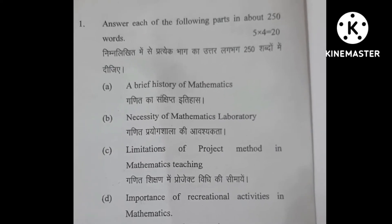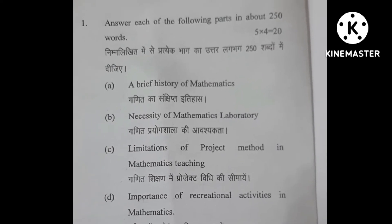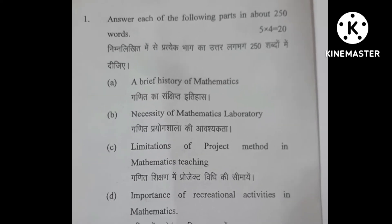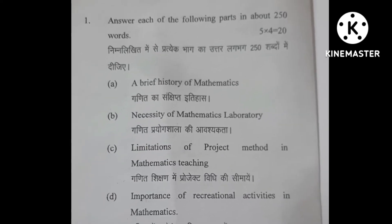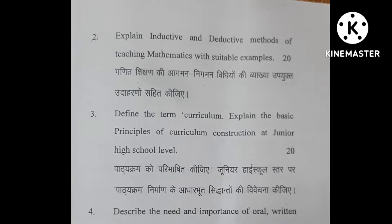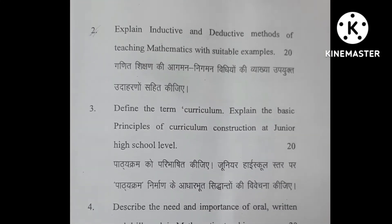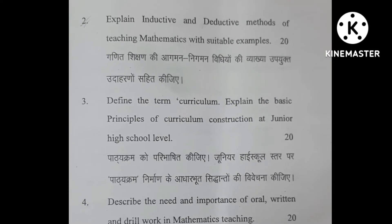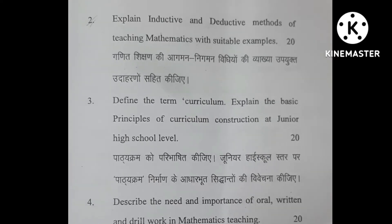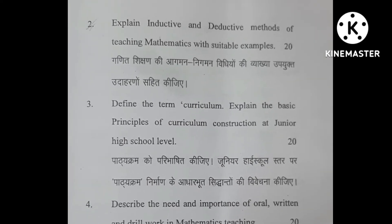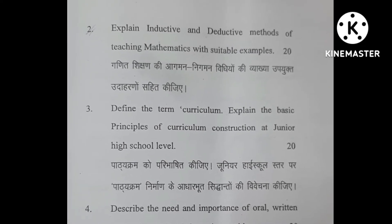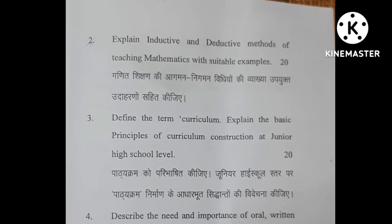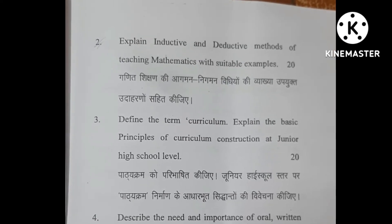Section A starts here. Answers must be written in 1000 words and each question carries 20 marks. The first question is: explain inductive and deductive methods of teaching mathematics with suitable examples. The next question is: define the term curriculum and explain the basic principles of curriculum construction at junior high school level.